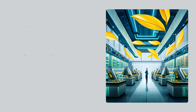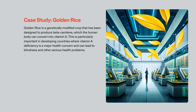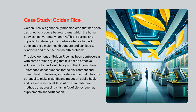Golden rice is an example of genetic engineering, designed to produce beta-carotene to address vitamin A deficiency in developing countries. Developing golden rice has been controversial, with some arguing it may have unintended consequences. However, it has been proposed as a more sustainable solution than traditional methods, such as supplements and fortification, for addressing vitamin A deficiency.